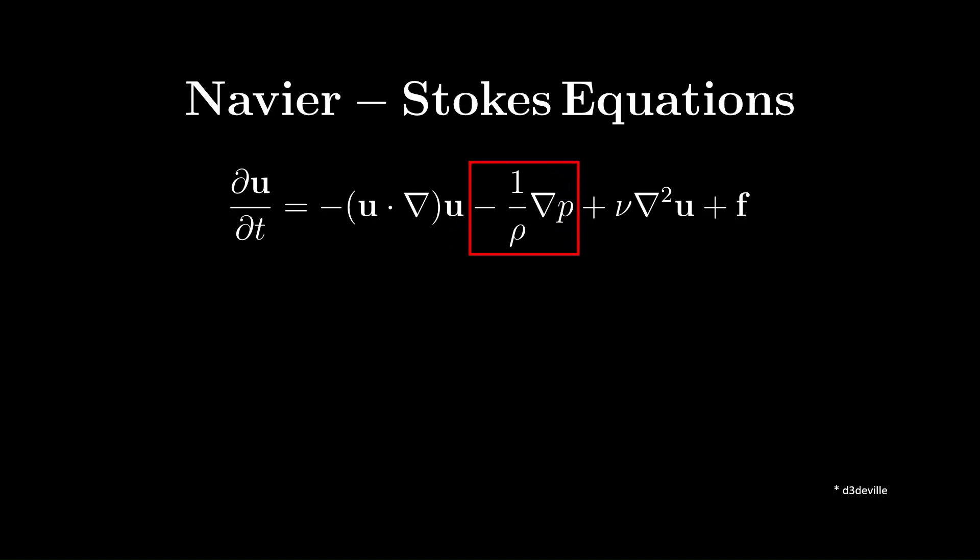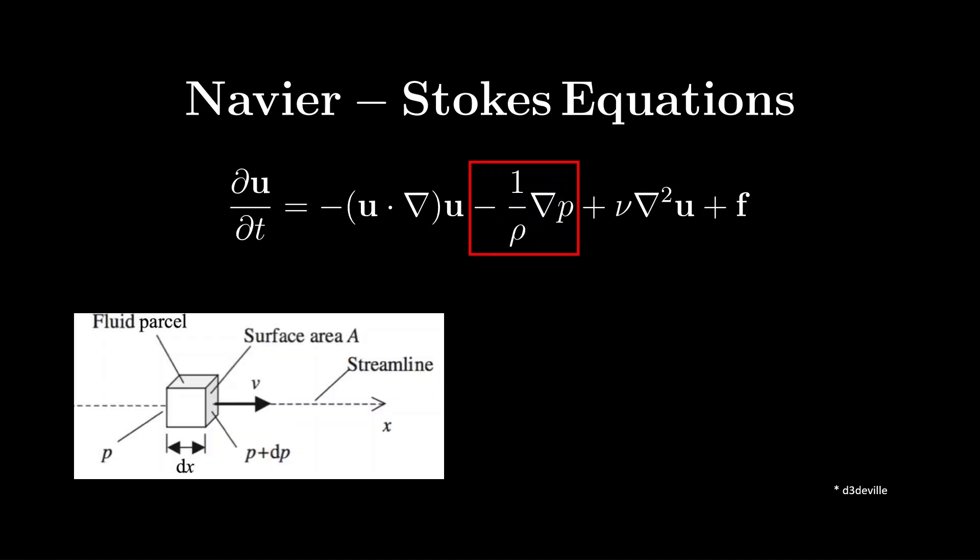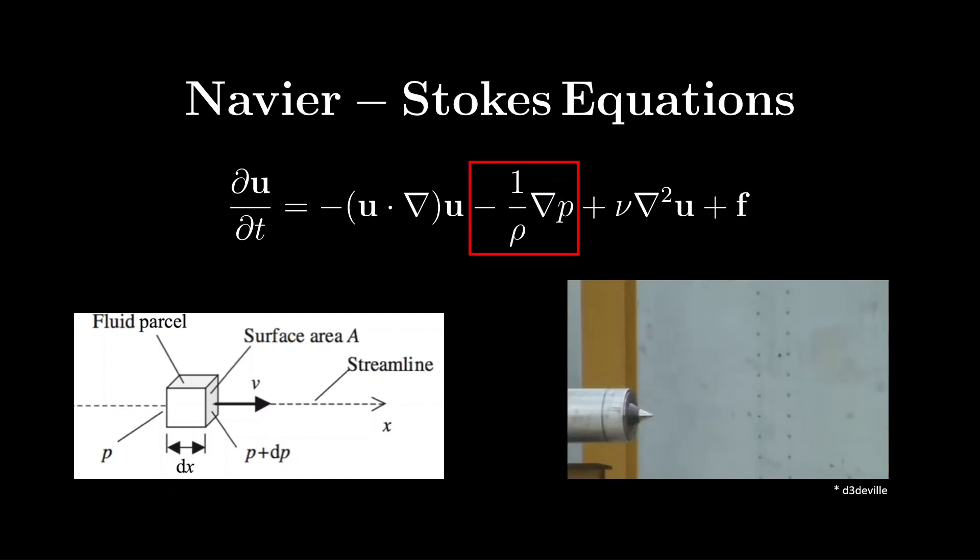The second term, 1 over rho (density) times the gradient P (pressure), represents the effect of pressure gradients on the fluid. To visualize this, imagine a small cube of fluid. Varying pressures on its opposing faces generates a net force, causing motion. These pressure differences create forces that drive the fluid from regions of high pressure to low pressure.